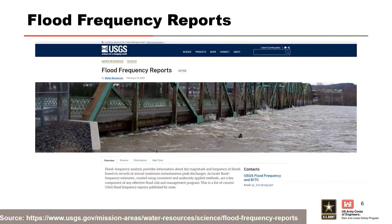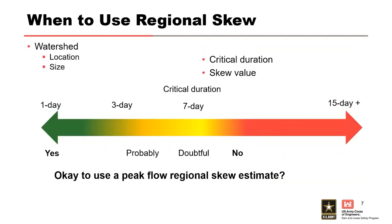It's important to use only published regional SKU estimates from recent studies based on modern methods. You may be familiar with the Bulletin 17B regional SKU map — we would advise you not to use that, as it used older methods that are not as good as those available today. You also need to read the study to understand whether it is appropriate for your site, because sometimes they look at certain types of watersheds that might not match the watershed you have.